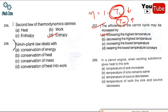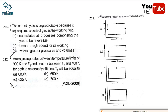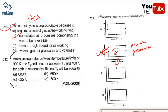Question 209: in a Carnot engine, when the working substance gives heat to the sink, the temperature of the sink remains the same because it is a finite-capacity reservoir. Question 210: the Carnot cycle is impractical because it necessitates all processes comprising the cycle to be reversible — correct option is B. Question 211: the Carnot cycle is represented clockwise on a T-s plot because it is a power-producing cycle — correct option is B.